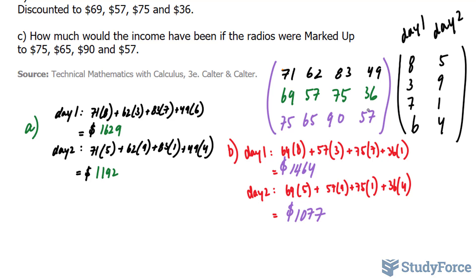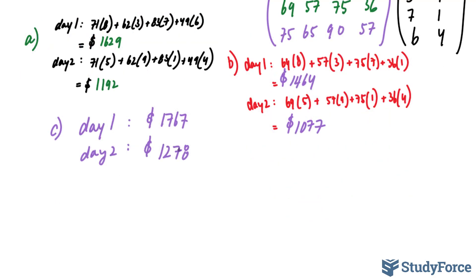And if you've done that correctly, you should end up with the following. And as expected, the earnings went up for both of the days. To represent your answer as a matrix, your final answer, which includes the solutions for A, B, and C, you would write down the following.